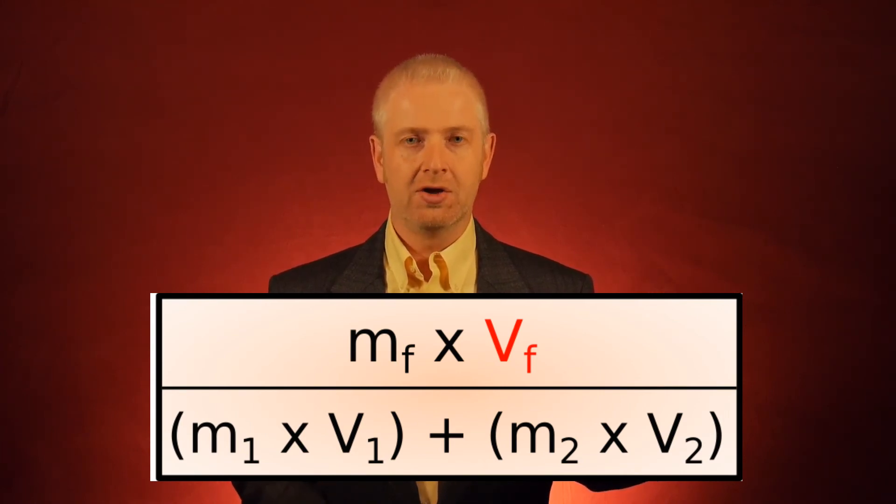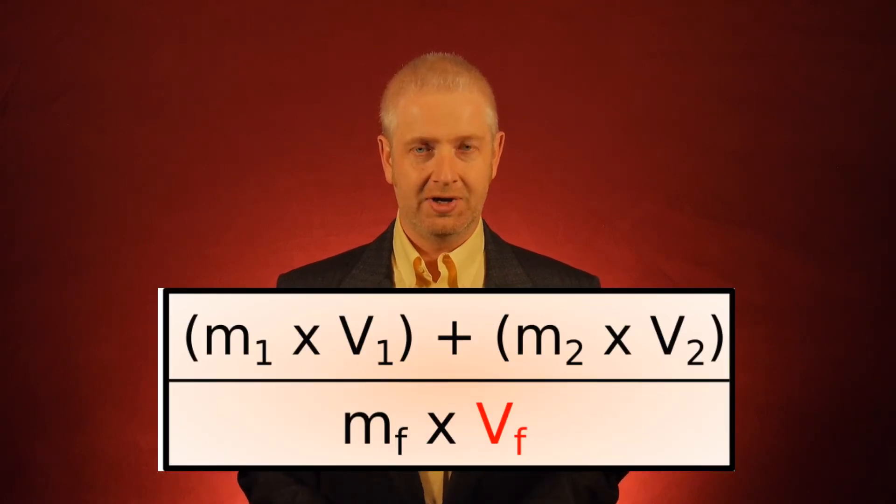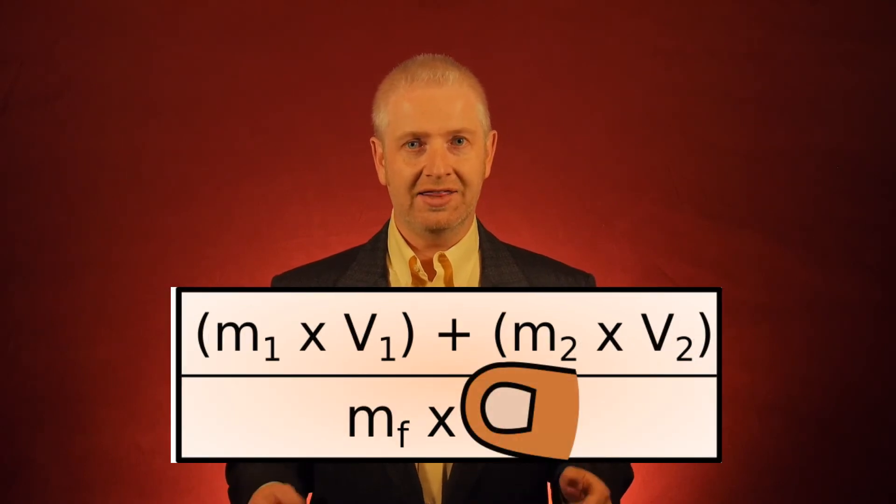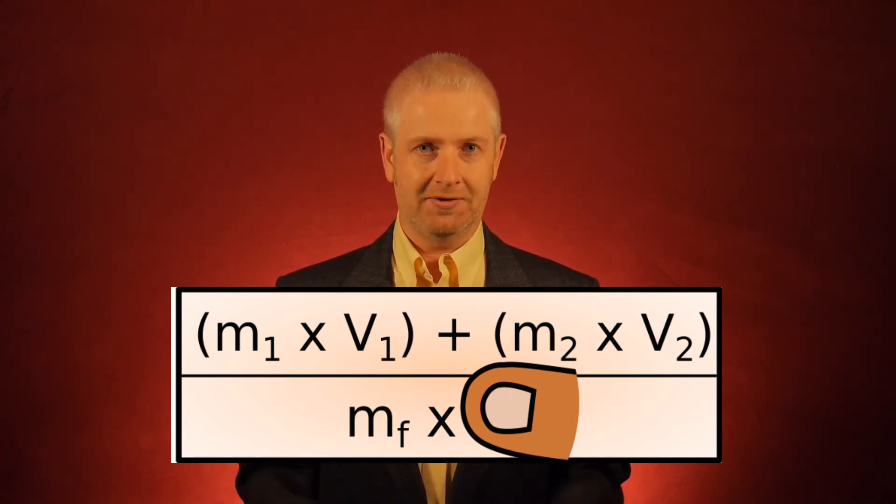Rule number two: is it on the top of the square? Yes, it is. So flip the square upside down. And once you've done that, all you have to do is cover over Vf. And that will give you Vf equals M1 times V1 plus M2 times V2 divided by Mf.